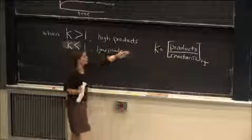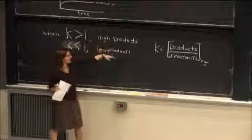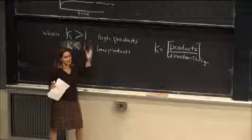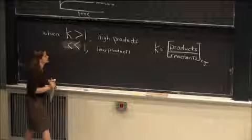So if K is greater than 1, there are more products than reactants. If it's less than 1, there'd be less products than reactants.